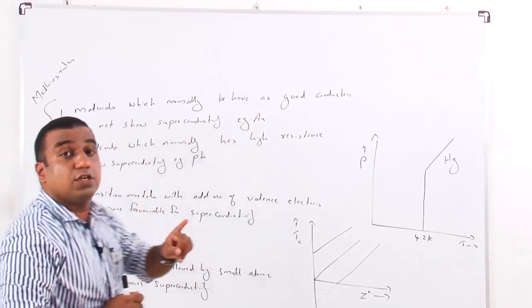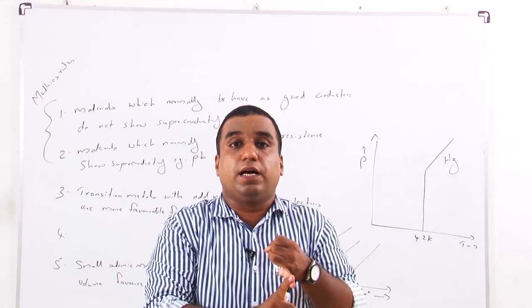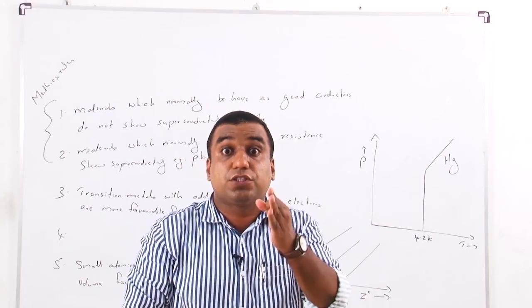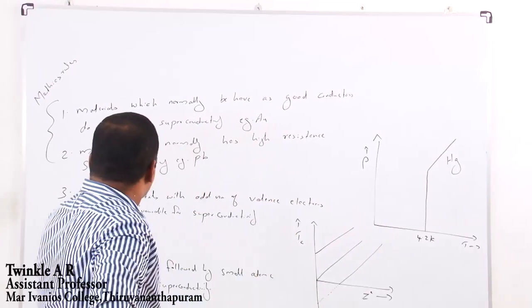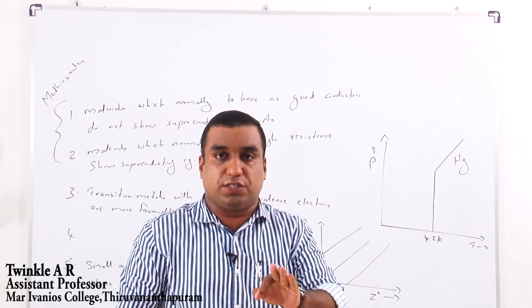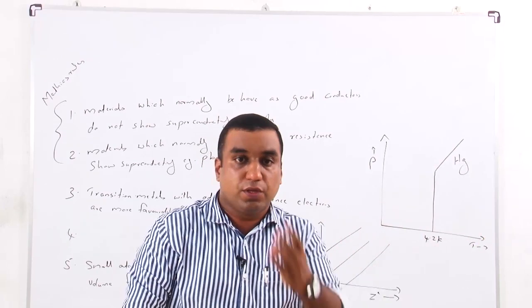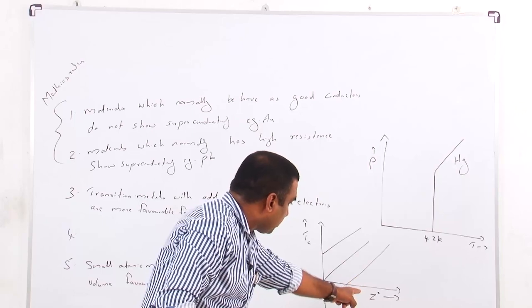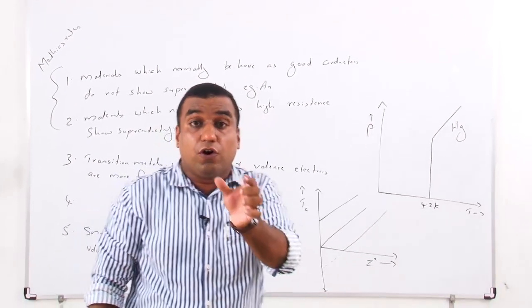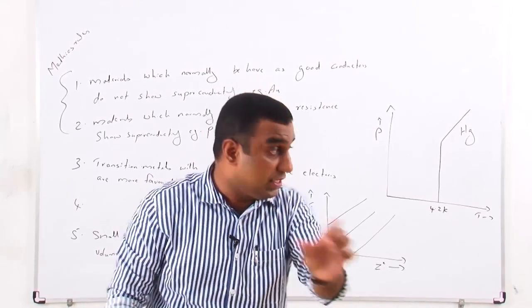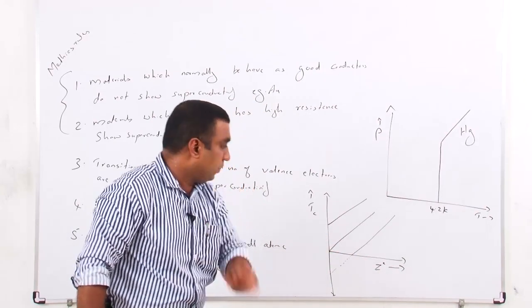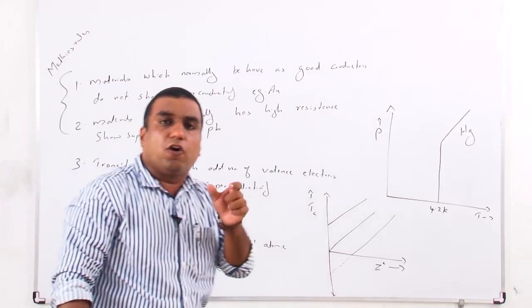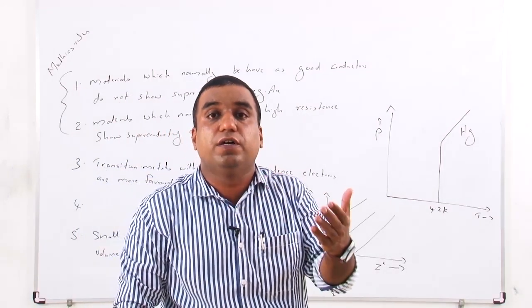To summarize Matthias rules: (1) Materials which normally behave as good conductors do not show superconductivity — gold is an example. Materials which normally behave as bad conductors show superconductivity — like lead. (3) Transition metals with an odd number of valence electrons like 1, 3, 5, or 7 show superconductivity. (4) Plotting critical temperature vs. the square of atomic number for elements in a particular row gives a straight line. (5) Small atomic mass followed by small atomic volume favors superconductivity.